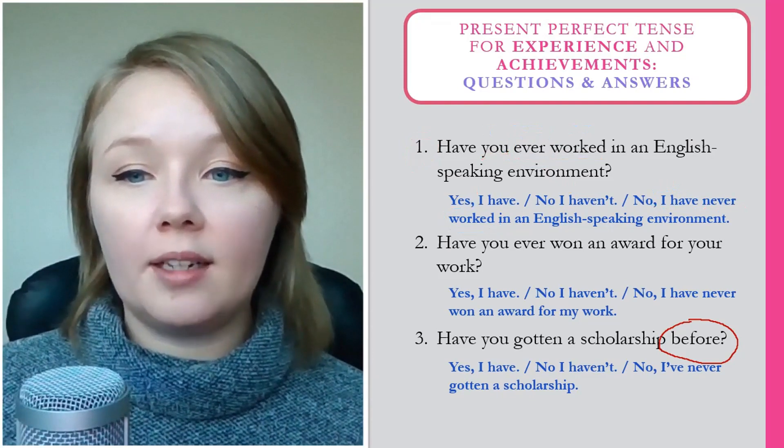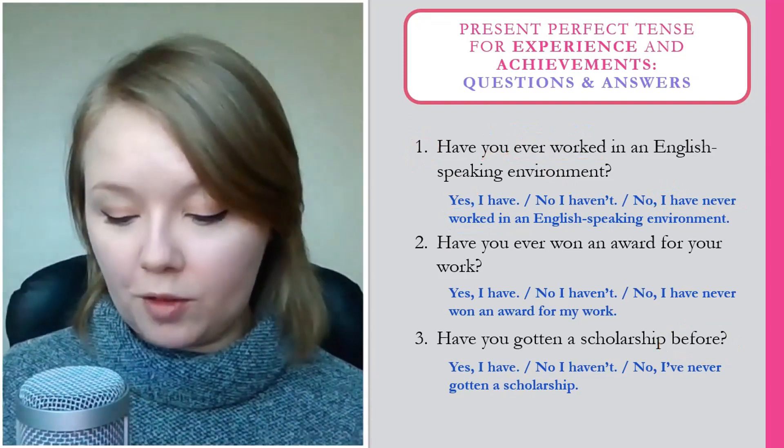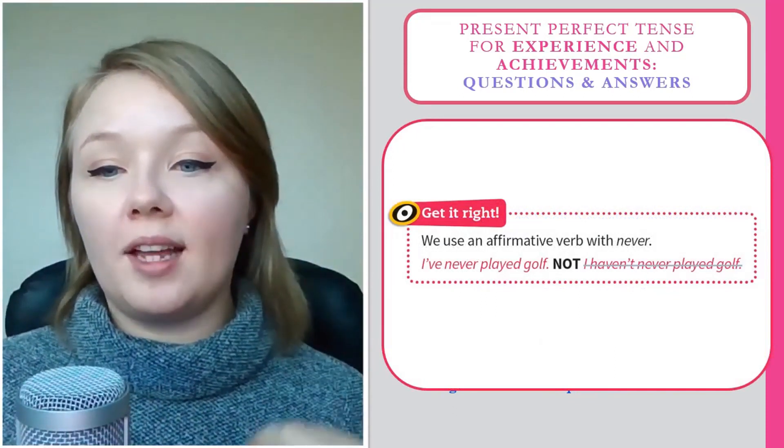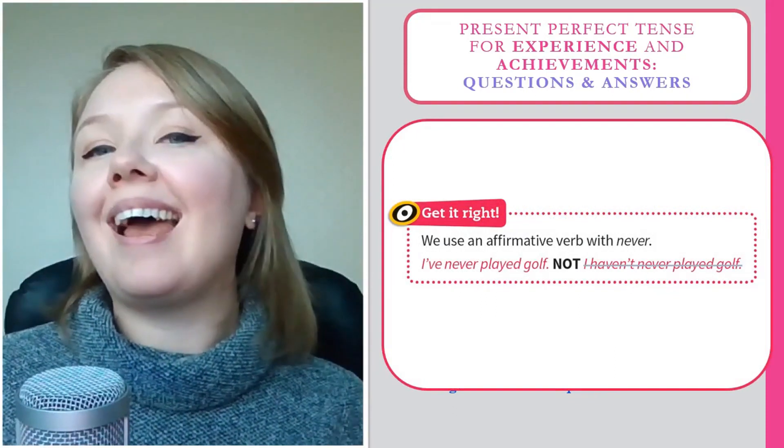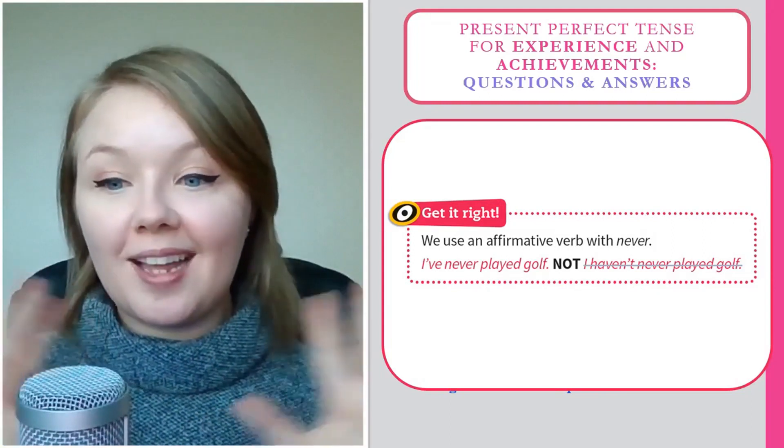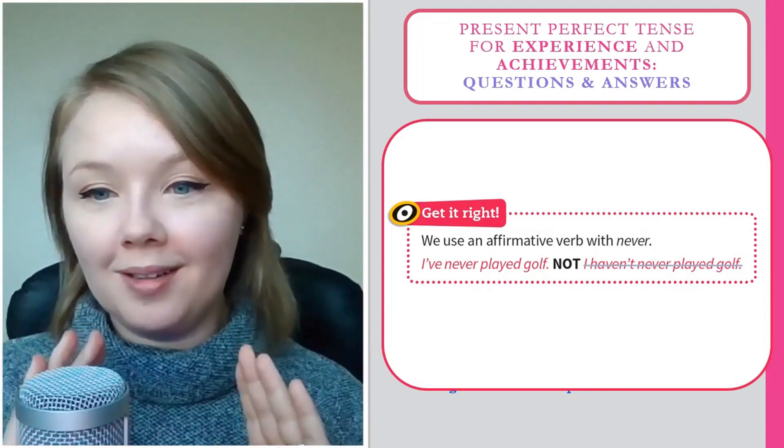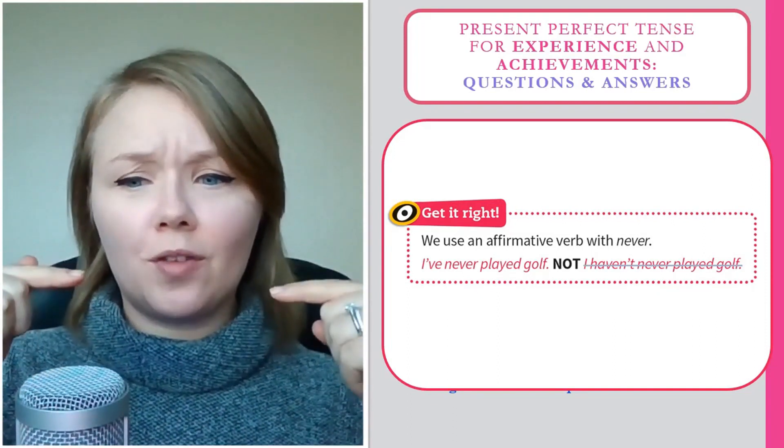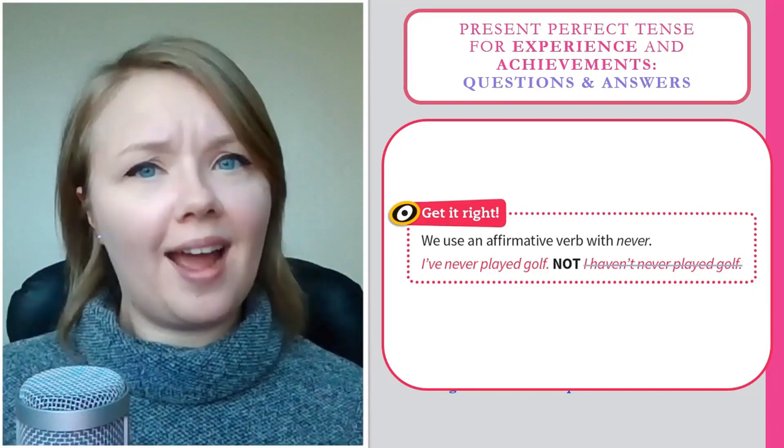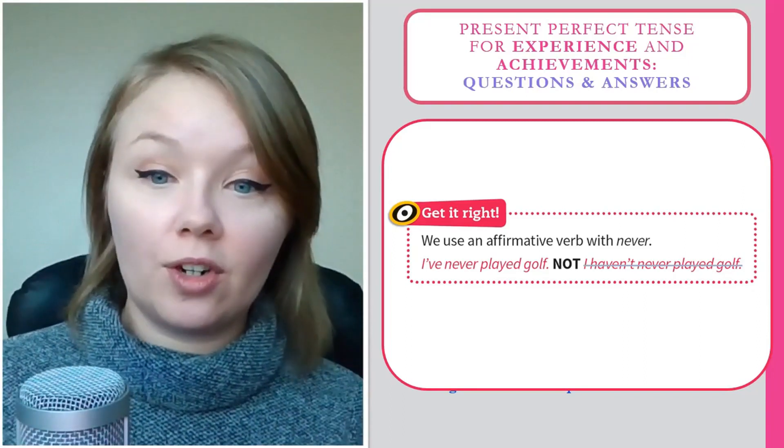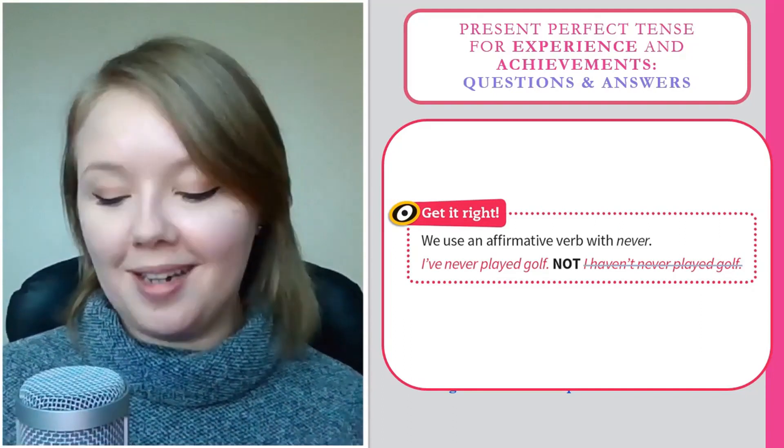So let's go ahead and look at what we should remember most from this slide. We always use the affirmative verb, I have never, when we're using the word never. So we would not say I have not never, right? That's in English called a double negative. Not never. That means I have. So make sure to use I have never if you're answering with never.